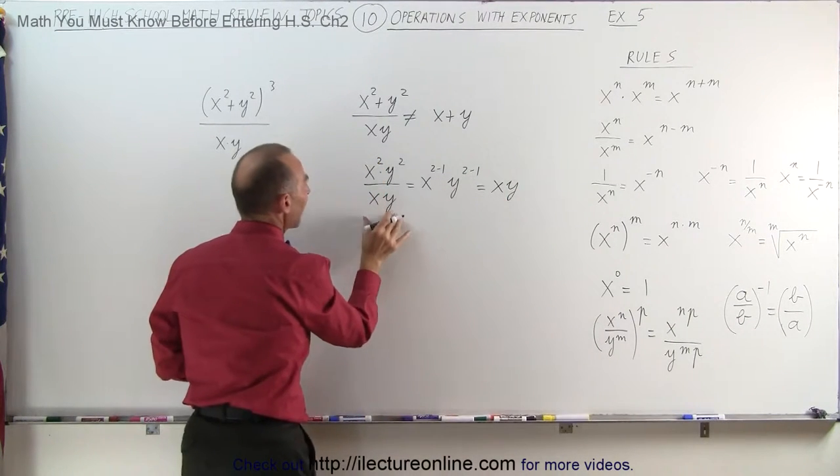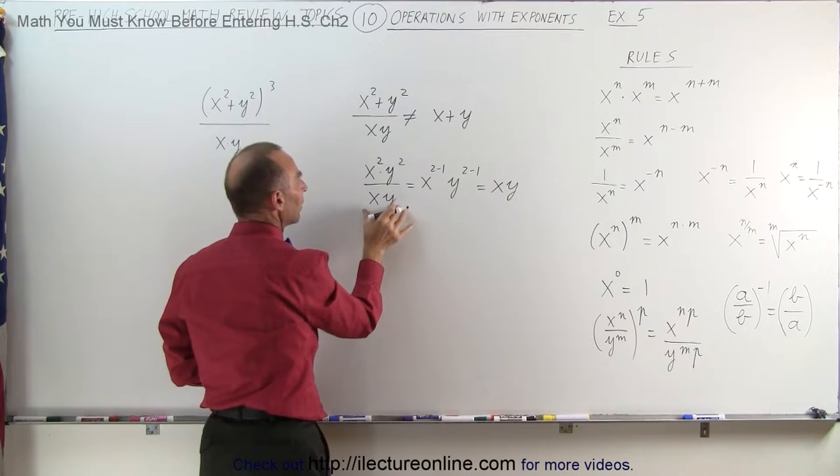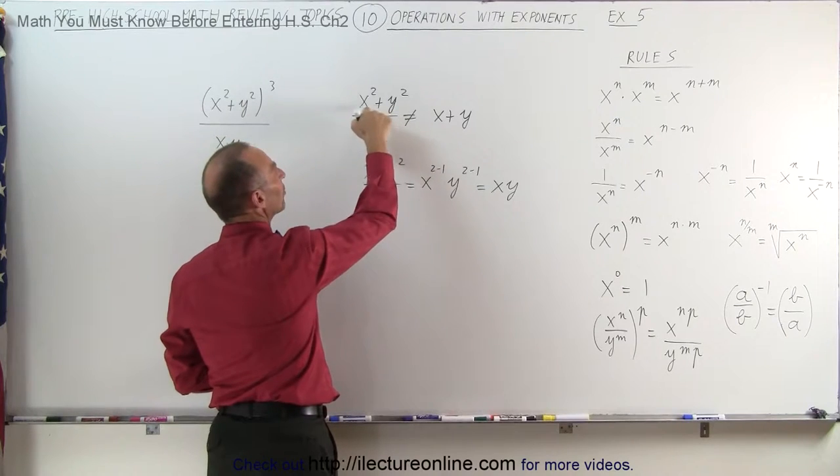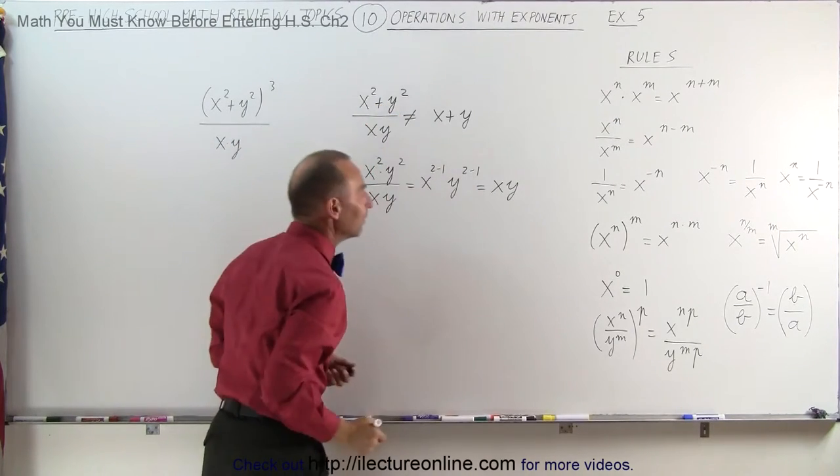In this case, you can divide the x and the y in the denominator into the numerator, because this is multiplied. Here you cannot do it, because it's x squared plus y squared.